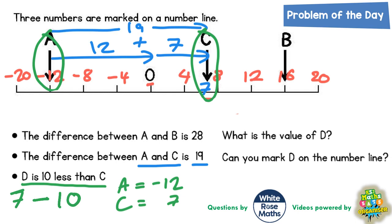So from seven, if we go down seven, that would take us back to zero. And then down another three, that would take us three below zero to minus three. And that is our answer for D. D must be pointing at minus three.